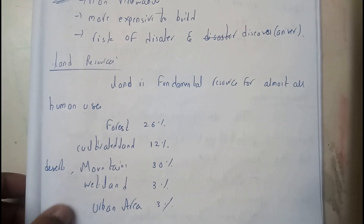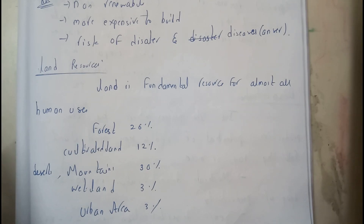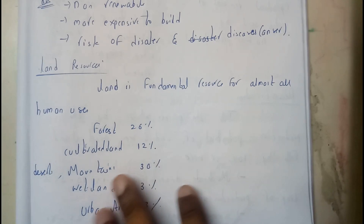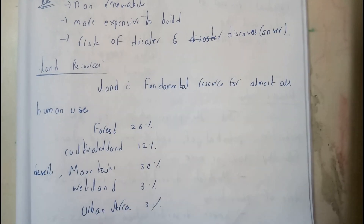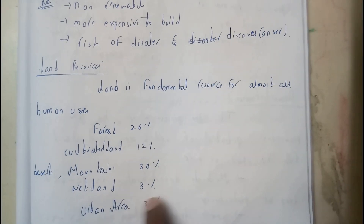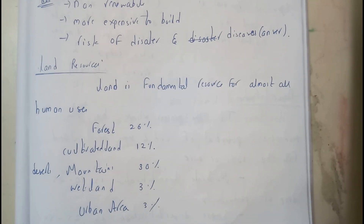Basically, what is a land resource? Land is a fundamental resource for almost all human beings — we live on the surface of the earth, which is land. Forest is covered by 26%, cultivated land is 12%, deserts and mountains are 30%, wetland is 3%, and urban area is 3%. I hope everyone got a small idea on what is a land resource.